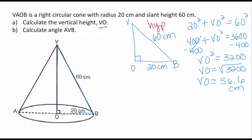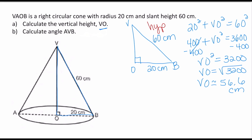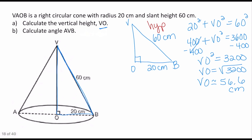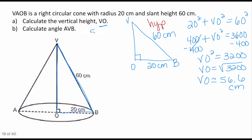This makes sense because the slant height — the longest side of the right triangle — is 60, so our answer for VO has to be less than that. The vertical height VO is 56.6 centimeters.